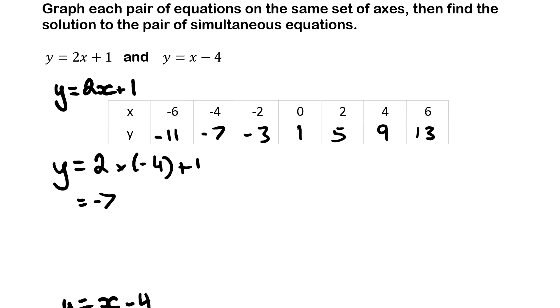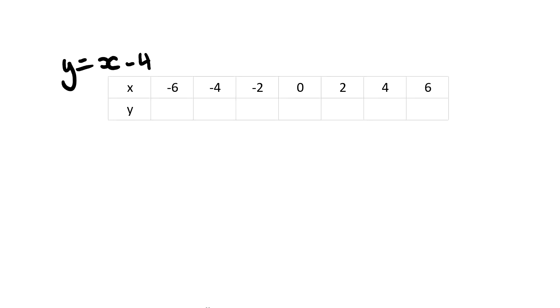Once you've got it full, those are your coordinates to plot on the number plane. Because we have two equations, we need to do this for both, so we're going to repeat the same process. We would have negative 6 take away 4. Negative take away another negative becomes a bigger negative. Then you continue the process until all is full.